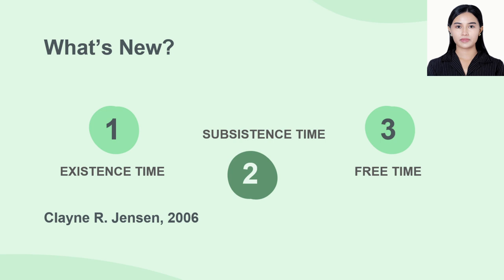When we say subsistence time, it refers to the hours spent for economic purposes. Examples of economic purposes include going to work, doing your chores at home, and for you students, your hours spent in school. That is called subsistence time.